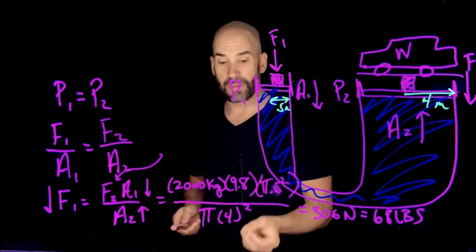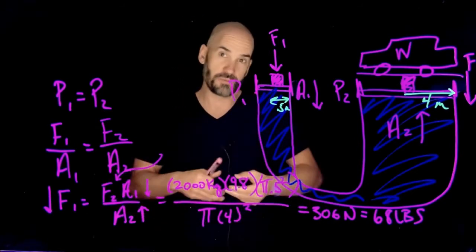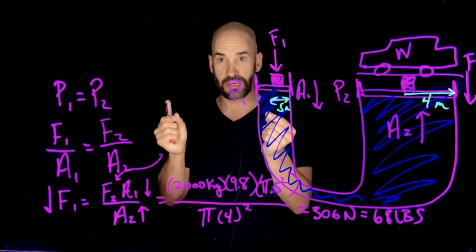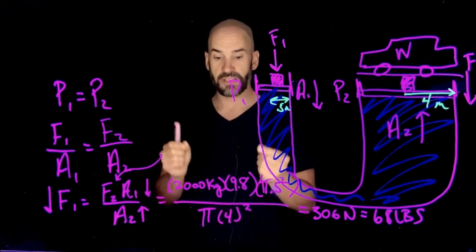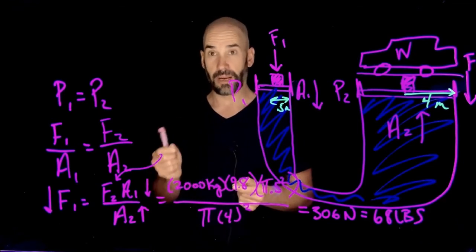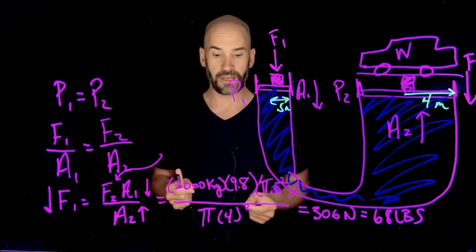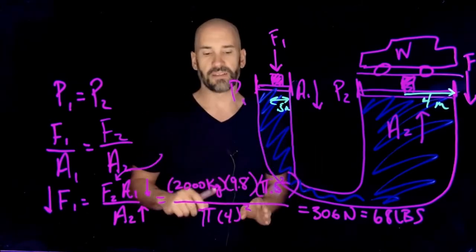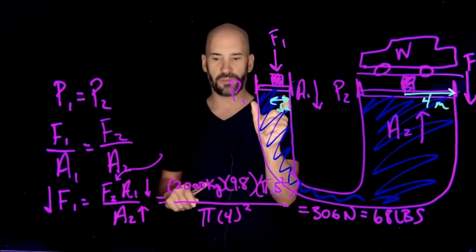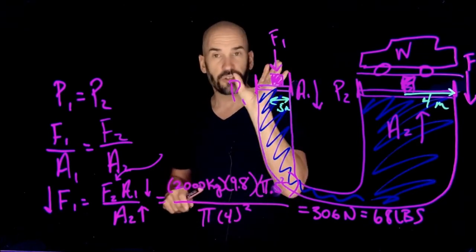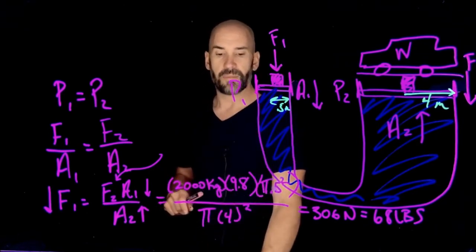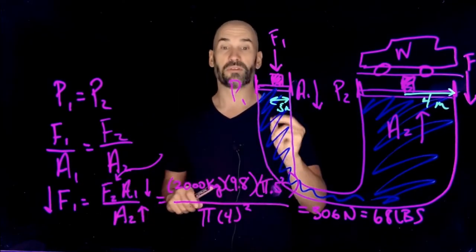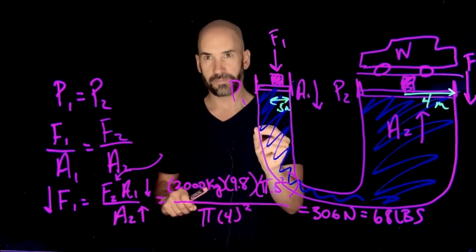One common example is that blood pressure readings, for example, 130 over 80, they give the maximum and minimum gauge pressures in the arteries measured in millimeters of mercury or torr. Blood pressure varies with vertical position of the body, which we're going to talk about later. That basically goes back to the why do we care question. So just want to make that distinction, and then when we come back to the next video, we're going to be talking about another one of the most important concepts in fluids, which is buoyancy.